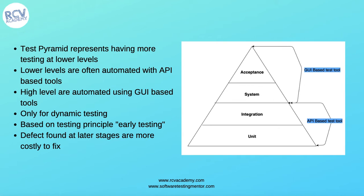This test pyramid is only applicable for dynamic testing. Defects found at later stages are more costly to fix — a defect found in acceptance testing will be more costly to fix than one found in unit testing. That's the whole purpose of the test pyramid: the majority of testing should be in unit testing, then integration, then system, and then acceptance. Acceptance testing should be the minimal amount, just ensuring that the functionality delivered fulfills the acceptance criteria defined by the stakeholder.